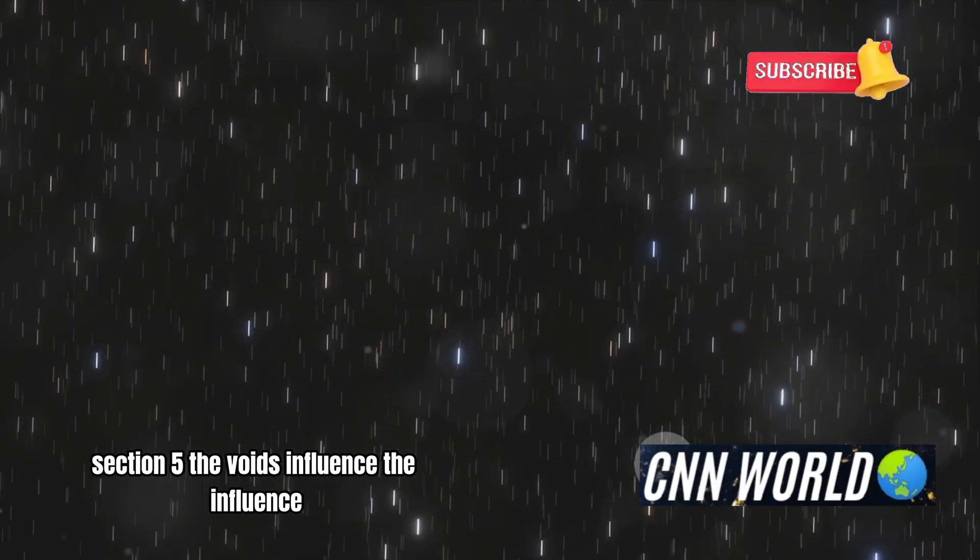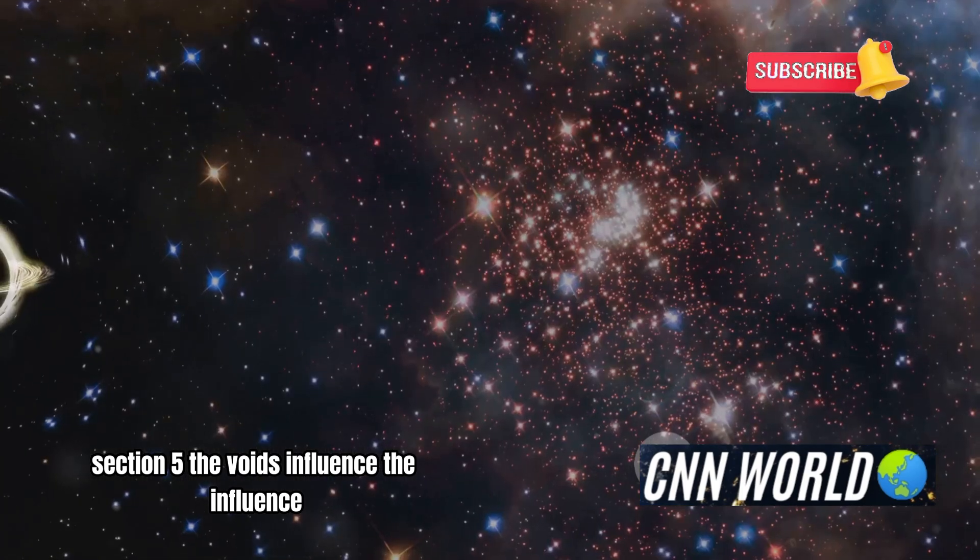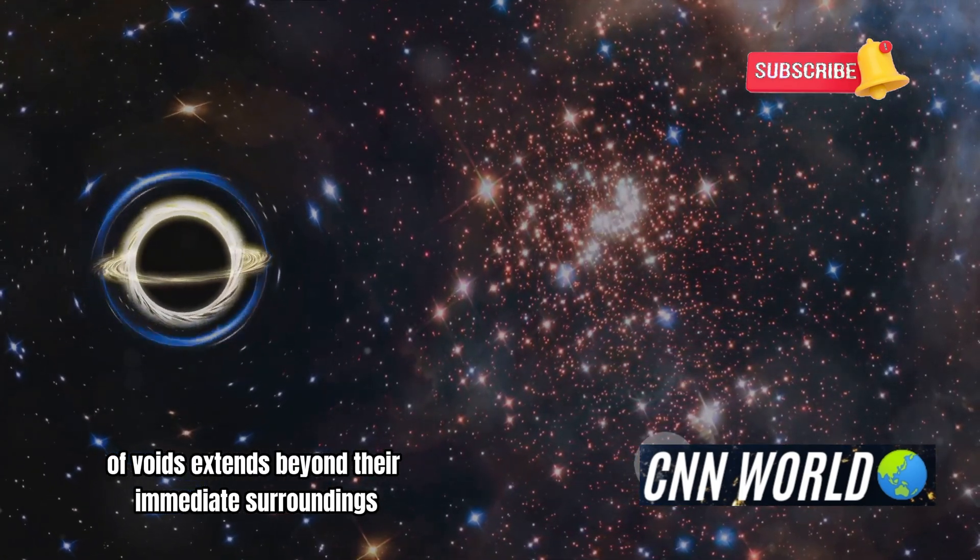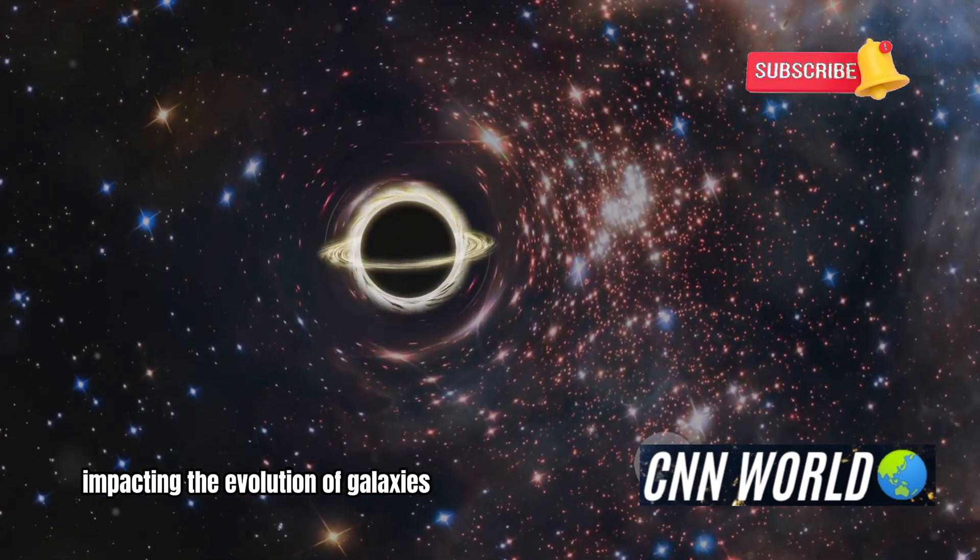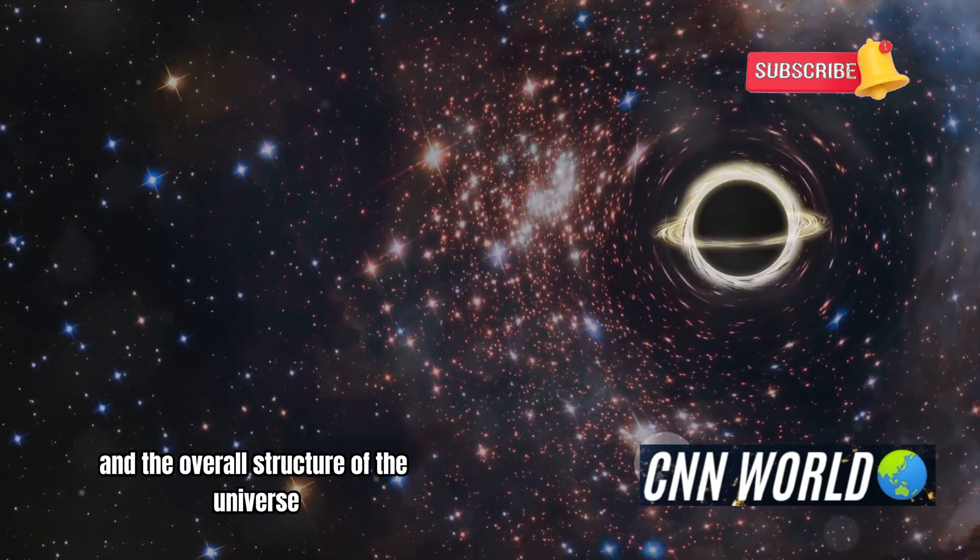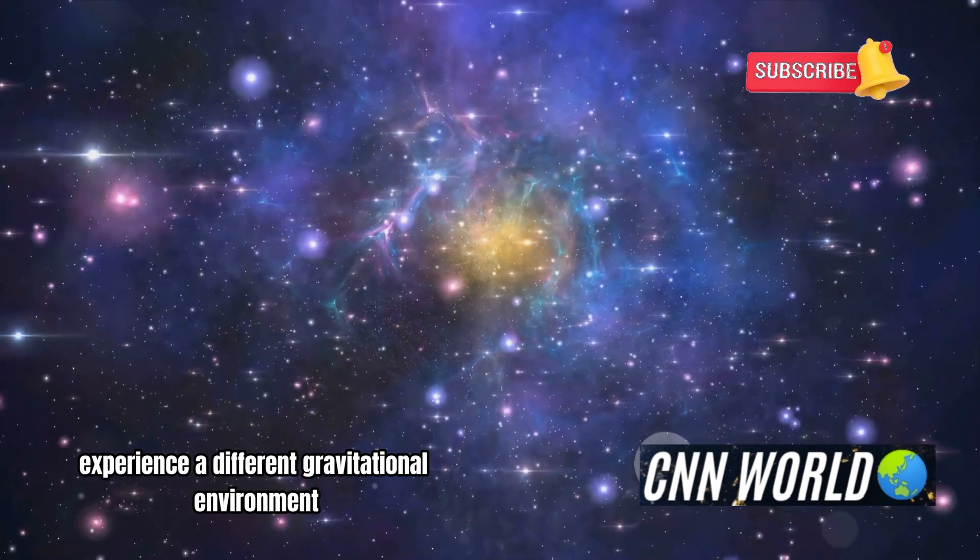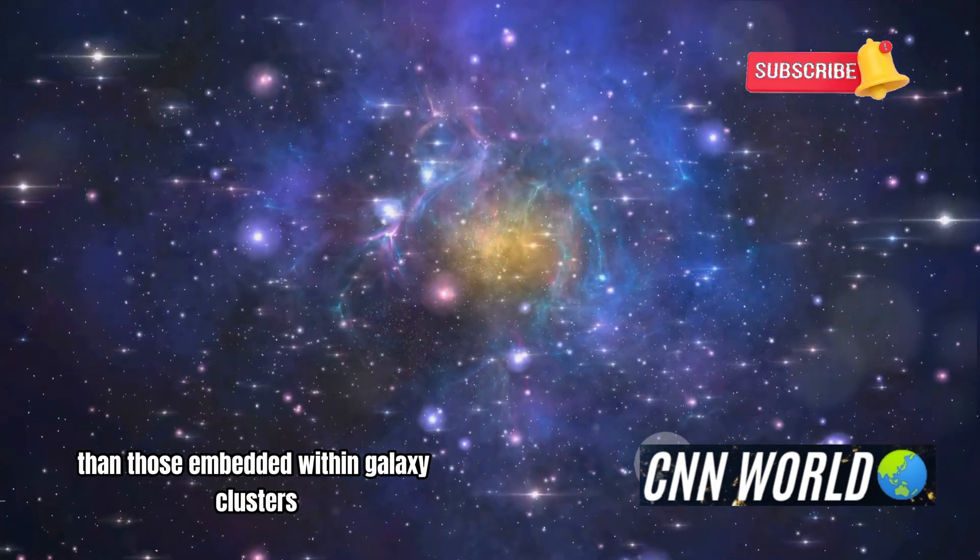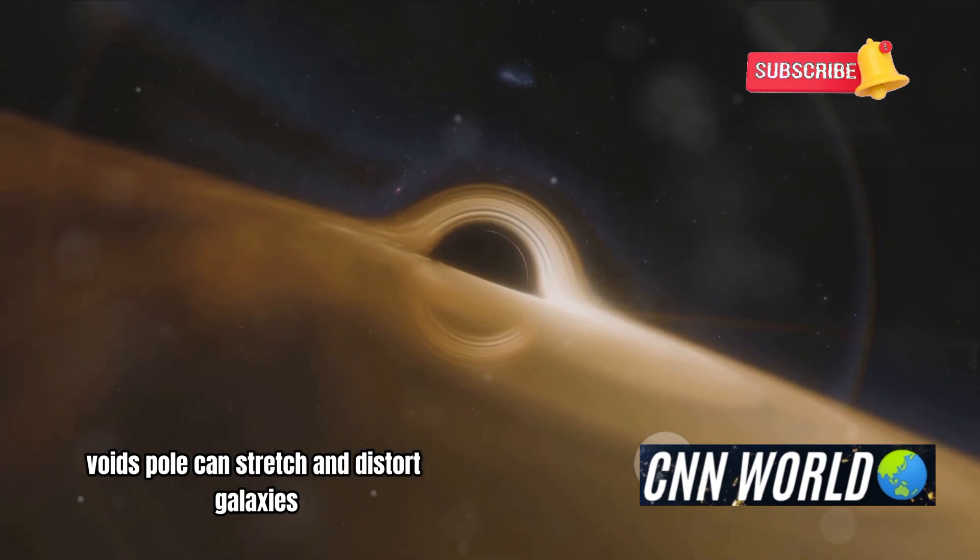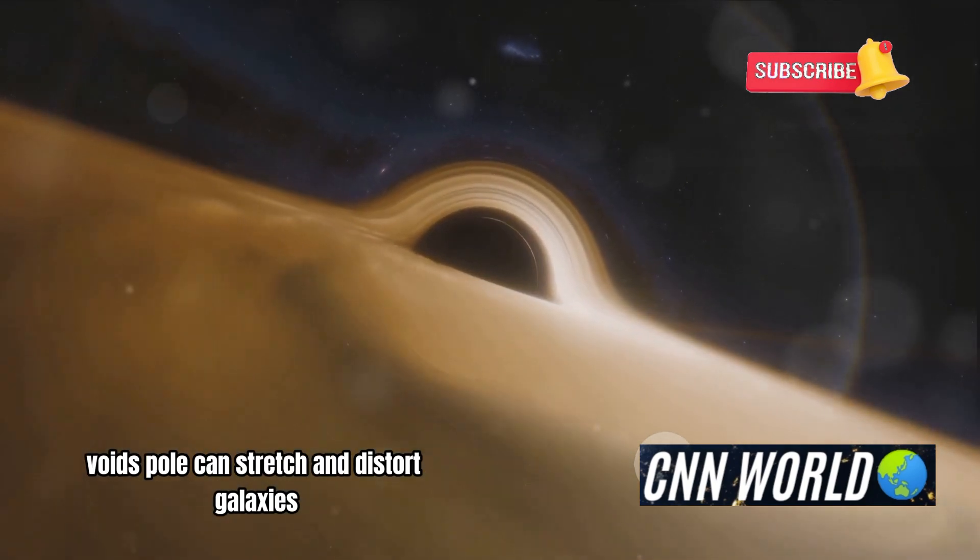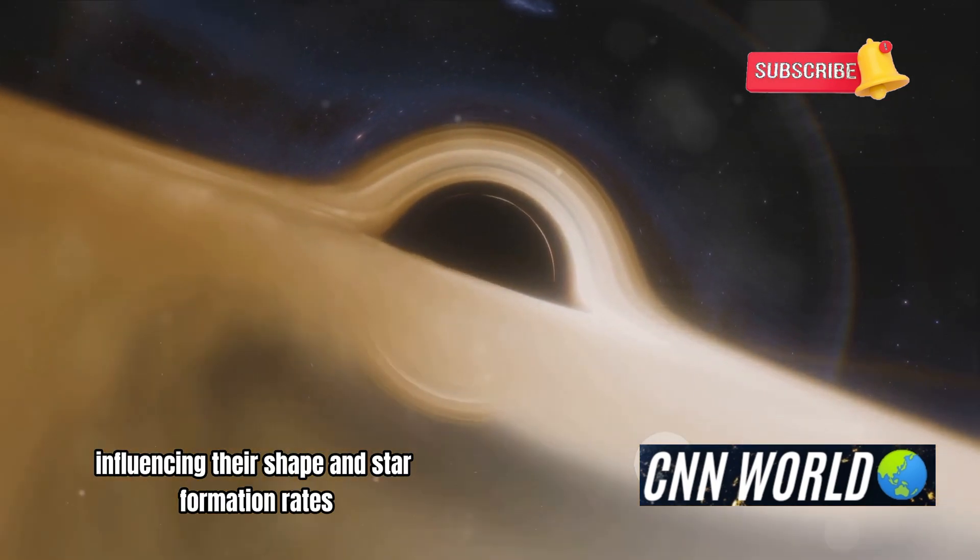Section 5. The Voids Influence. The influence of voids extends beyond their immediate surroundings, impacting the evolution of galaxies and the overall structure of the universe. Galaxies located near the edges of voids experience a different gravitational environment than those embedded within galaxy clusters. The voids pull can stretch and distort galaxies, influencing their shape and star formation rates.